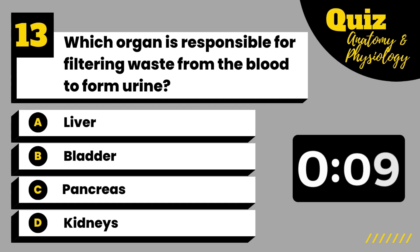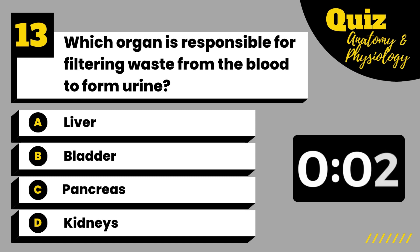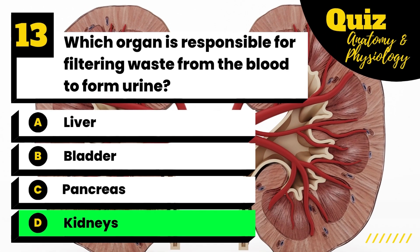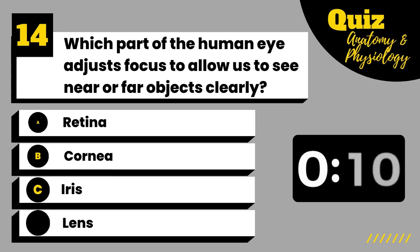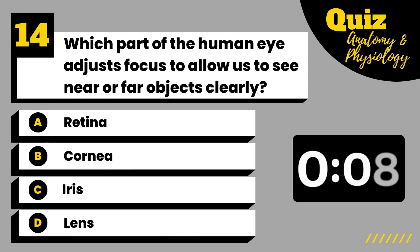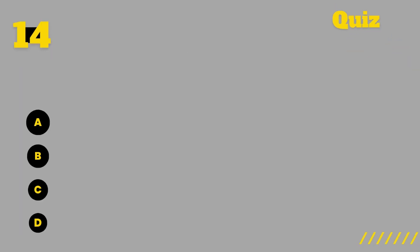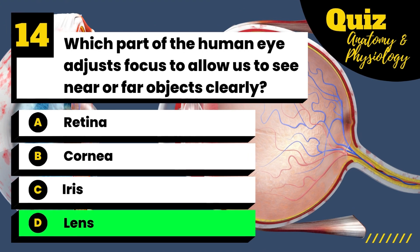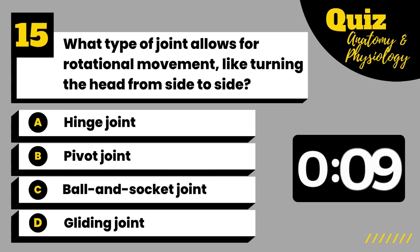Which organ is responsible for filtering waste from the blood to form urine? Which part of the human eye adjusts focus to allow us to see near or far objects clearly? What type of joint allows for rotational movement, like when you turn your head from side to side?